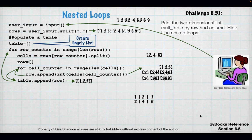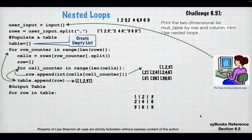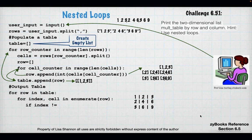When printing out the table, use a nested for loop with a bar in between elements. There are two nested for loops: one when populating the table, and one when printing out elements from the table.